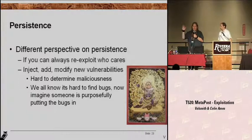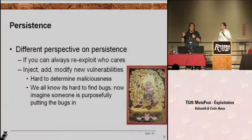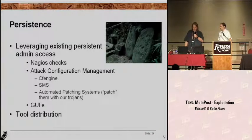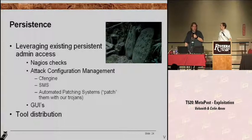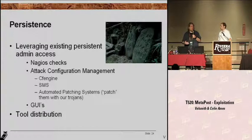It's very difficult to find bugs — people are writing fuzzers and doing all these crazy things to look for bugs. Now imagine someone is purposely putting bugs in the code. That would be very difficult to detect and even more difficult to understand — is this on purpose or just accidents of coding? We also like leveraging existing persistent admin access. There are lots of things out there, especially in the enterprise, that people use legitimately to have access to the hosts they're going after — things like Nagios, which is a big monitoring software. On some attacks, we'll actually add our own Nagios checks which go out and give us root on all the systems it's checking.